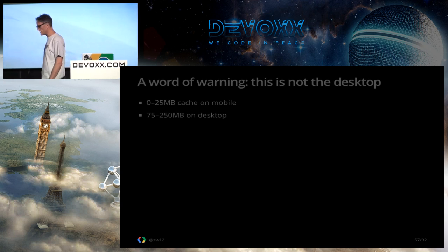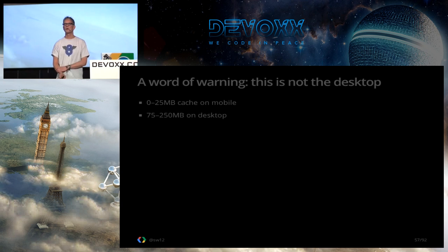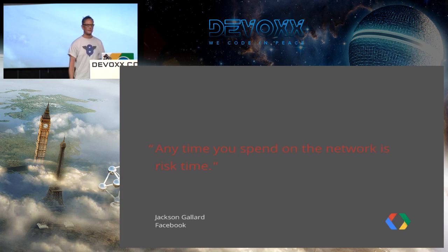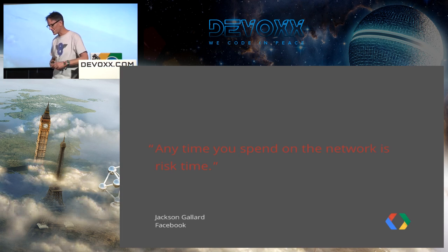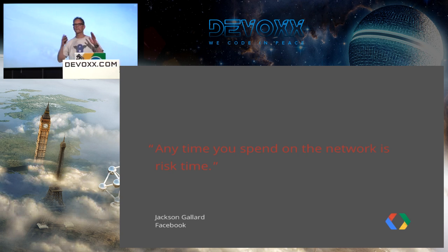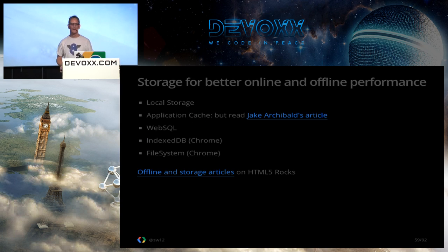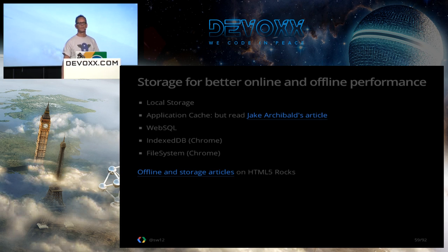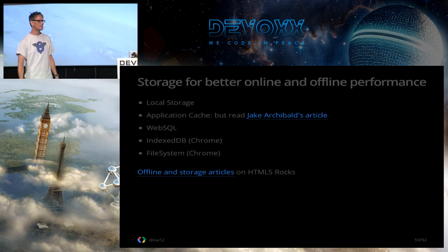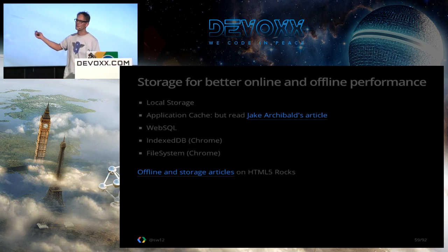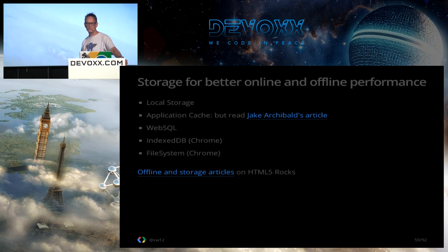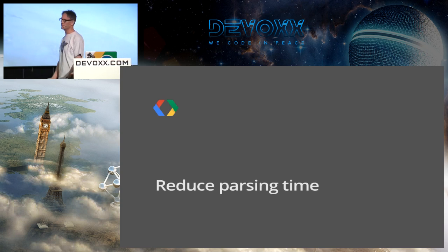Obviously we can do stuff to make sure we keep files on the client. It's worth remembering that browser caching on the client isn't what you may be used to on desktop. There was a great presentation from Jackson Gallant at Facebook a few weeks ago — he made this great comment: any time you spend on the network is risk time. We're working in an offline-first world and we really need to take advantage of these techniques. The W3C is working pretty hard to solve the problems with AppCache — check out Jake Archibald's article 'AppCache is a douchebag.' There are ways and means to keep stuff offline, which is obviously good for performance and enables your websites to work when users don't have connectivity.